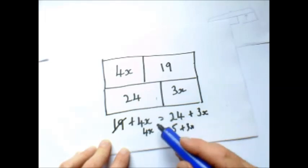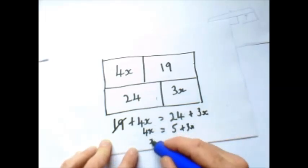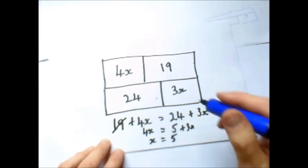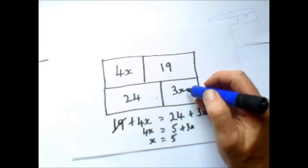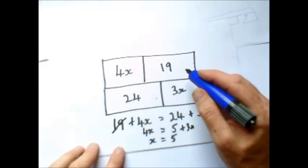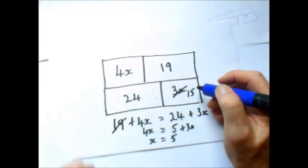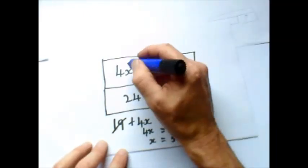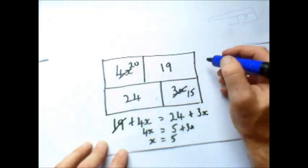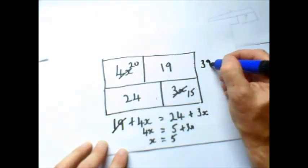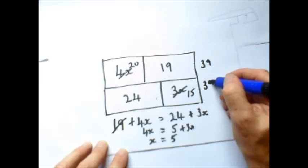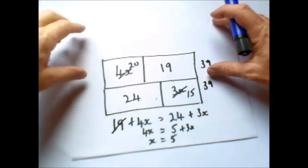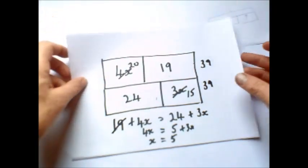So if I take 3x off this side, I take 3x off this side. So now x on this side, which is 1x, equals 5. Going back to this, I've replaced this with 15 because 3 times 5 is 15. And I replace this by 20 because 4 times 5 is 20. So now I've got 20 plus 19, which is 39. And we've got 24 plus 15, which is 39. So therefore, we know that the answer is correct. So that is further advance of bar modelling.